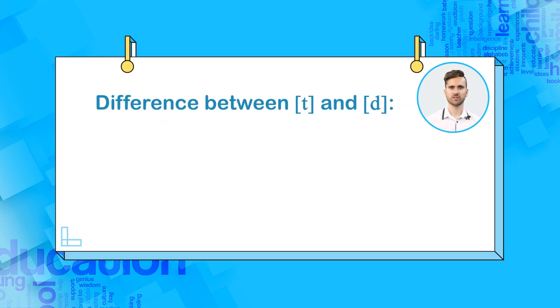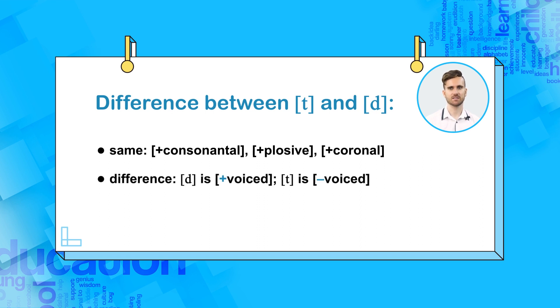Let's do the same to characterize the difference between T and D. They are both consonantal, plus plosive, plus coronal, which means that the tip of the tongue touches something, in this case, the alveolar ridge. However, the key difference is that D is plus voiced, whereas T is minus voiced.